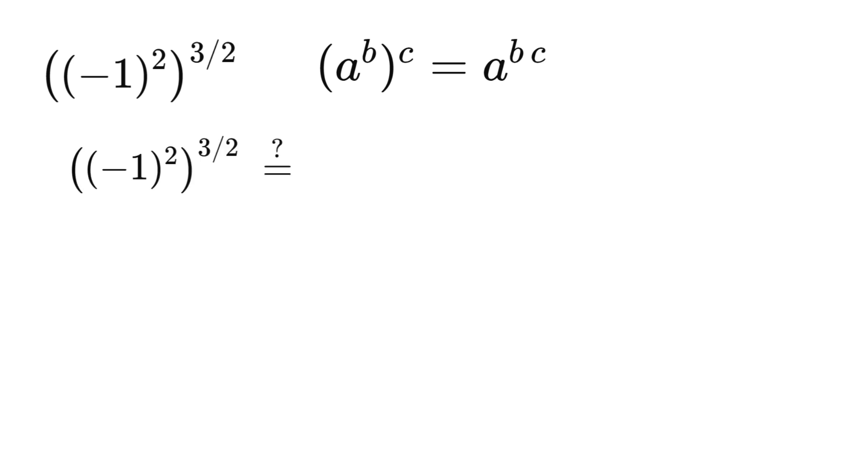So first approach, take minus 1, raise it to the product of the exponents, 2 times 3 halves, which gives you minus 1 to the third power, and that's minus 1.